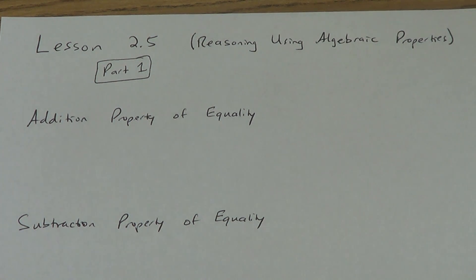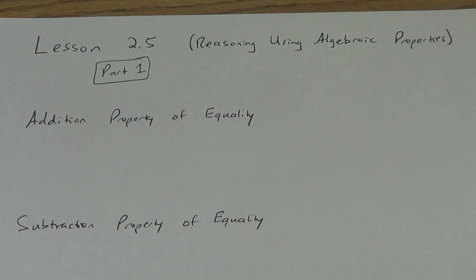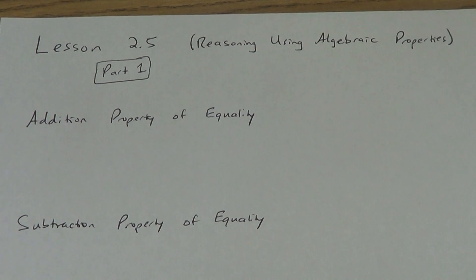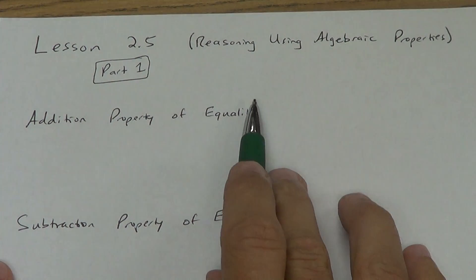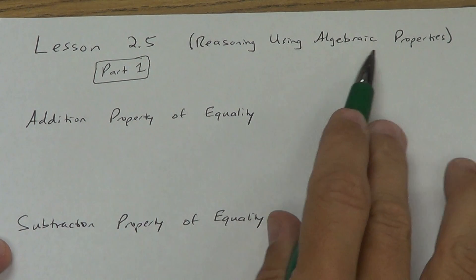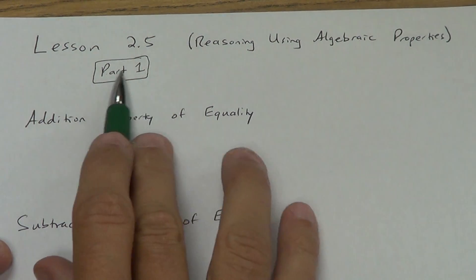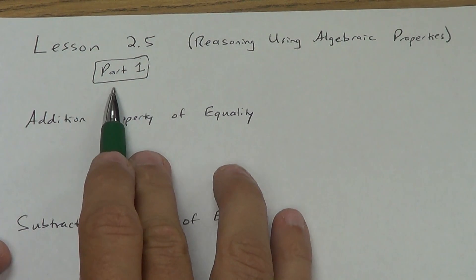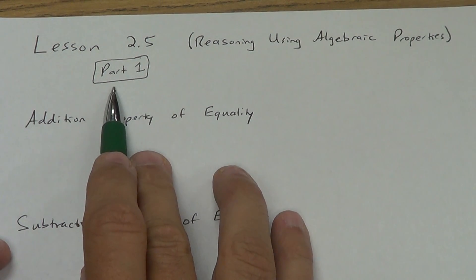All right, here we go, lesson 2.5. You're going to notice I've got the lesson number up there — 2.5, reasoning using algebraic properties — but it says part one. That means make sure you watch both videos.